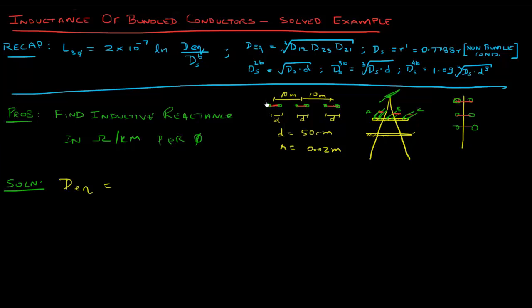Let's first find out the equivalent, that is d1 to 2. This is in essence 1, this is 2, and this is 3, right? So d1 to 2 is 10 meters, d2 to 3 is again 10 meters, d3 to 1 is 20 meters, and cube root of that. If you plug that into our calculator, should give us something like 12.6 meters.